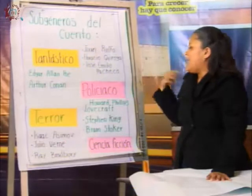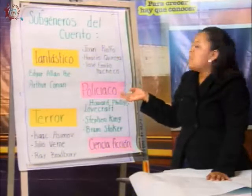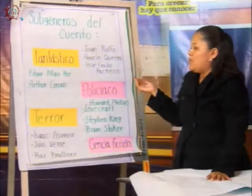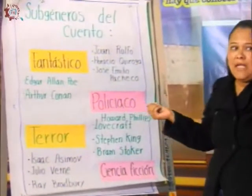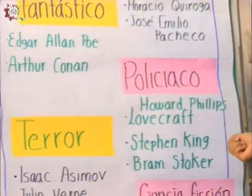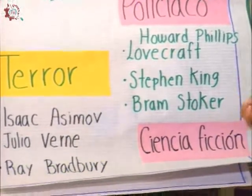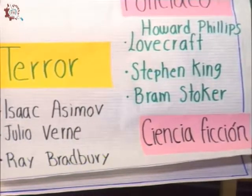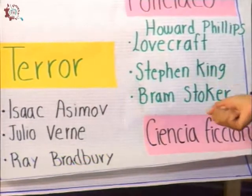El cuento de terror tiene como finalidad causar miedo en el lector. Algunos autores son H.P. Lovecraft, Stephen King y Bram Stoker. La ciencia ficción es la narración en la que nos presentan una realidad alterna a la nuestra, con avances en cuanto a la ciencia y a la tecnología. Algunos de los autores son Isaac Asimov, Julio Verne o Ray Bradbury.